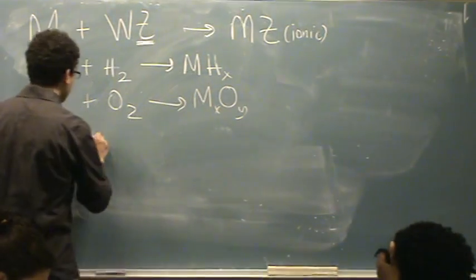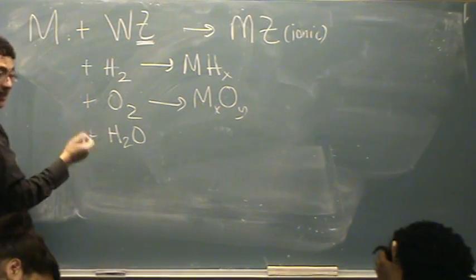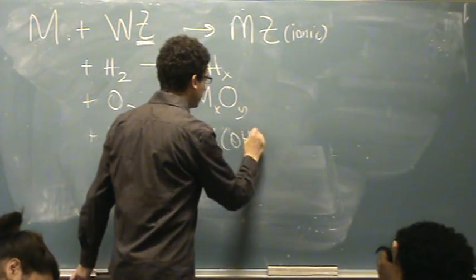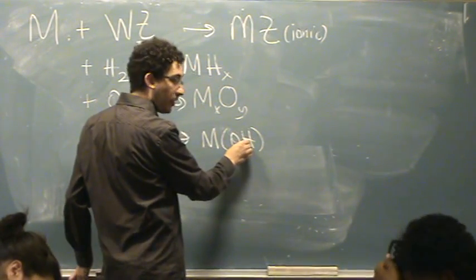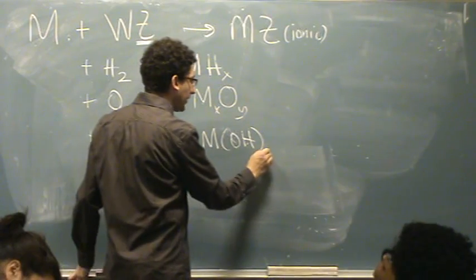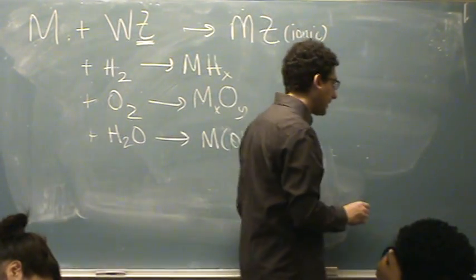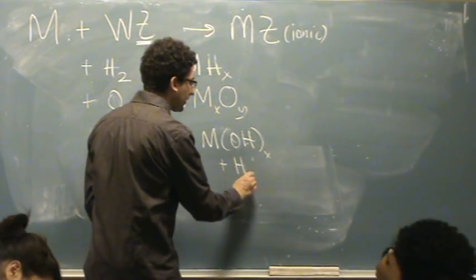Same thing for water. Water is H plus and OH minus, so we've got to add OH minus. Whenever you see water, it's going to add OH minus. M(OH)x, and then this will have its negative 1, so it will be a 1 here, but you've got to figure out what that is. Sometimes this will have plus H2 here.